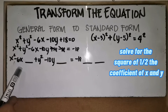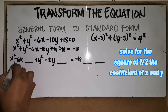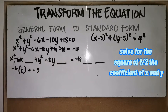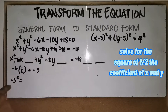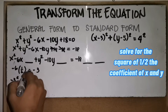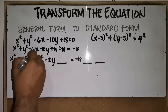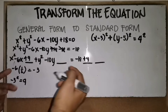Next, we will solve for the square of one-half the coefficient of x and y. The coefficient of x is negative 6. Negative 6 times one-half equals negative 3. And negative 3 squared is 9. So positive 9 should be written here on the left side. What is written here should also be written on the right side so that it is balanced.